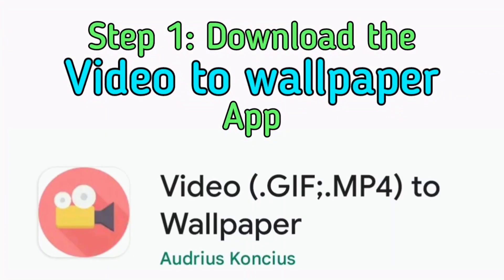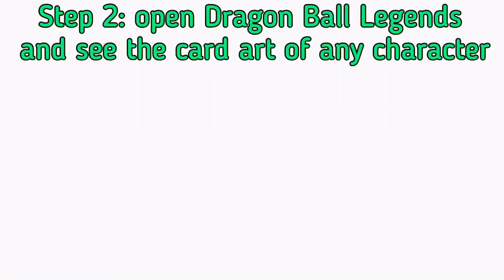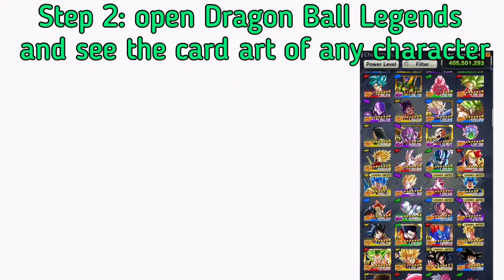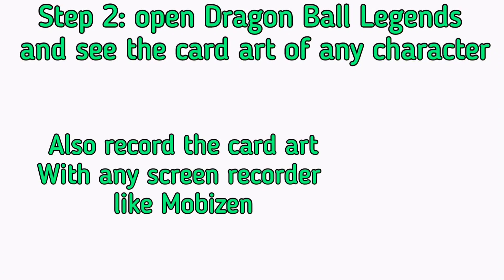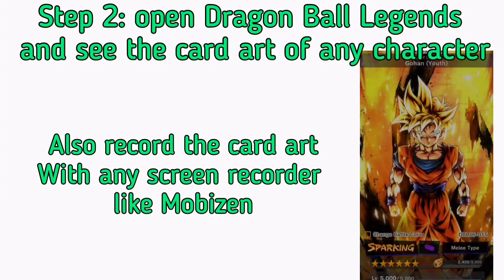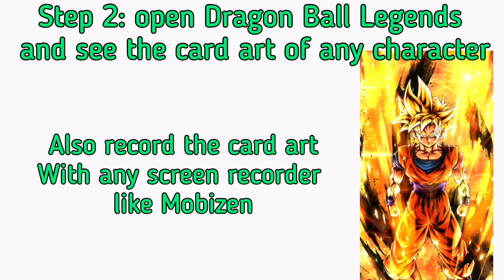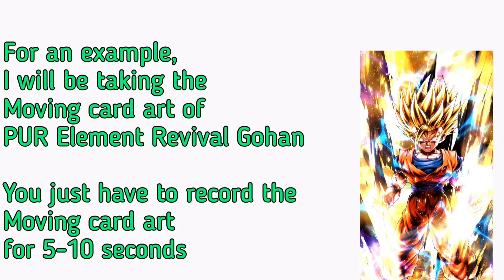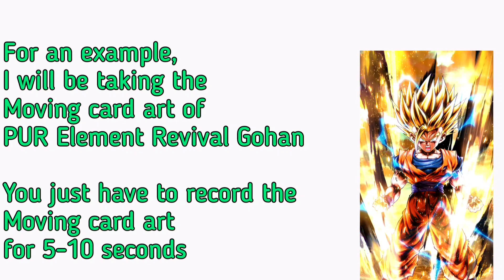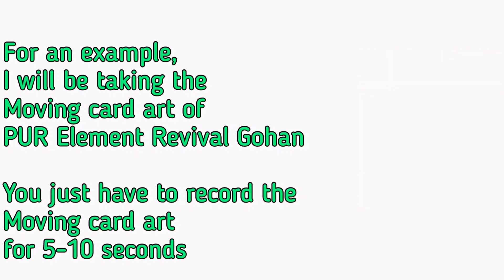Step 1: download the Video to Wallpaper app. Step 2: open Dragon Ball Legends and view the card art of any character, then record the card art with a screen recorder like Mobizen. For example, I will be taking the moving card art of Purple Element Revival Gohan. You just have to record it.